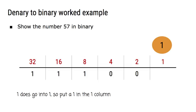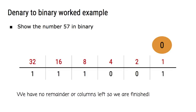And 1 can be taken away from 1, so we can put a 1 in our 1 column, and we have nothing left. We have no columns left to move to, and we have no remainder of our original value left. So we're finished. So 57 in binary is 1, 1, 1, 0, 0, 1.